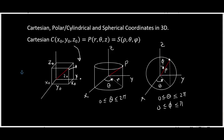Now for the connections among these systems: going from Cartesian to cylindrical, x₀ = r cosθ, y₀ = r sinθ, and z₀ = z.